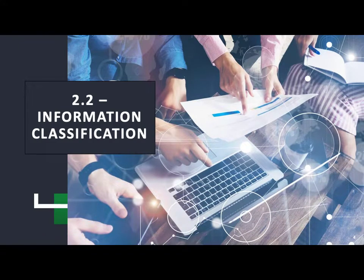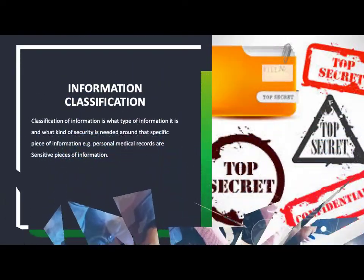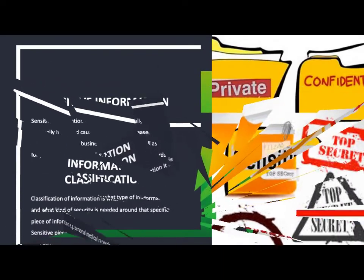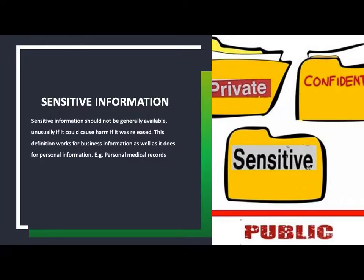Next, 2.2 — that's going to be classification of information. This revolves around how we can secure different pieces of data. For instance, do we need to make sure our medical records are private or out in the open? Obviously we need to make sure they are private and confidential. The first one is sensitive information — this is information that should not be generally available, and if put out in the open it could harm someone. For instance, personal medical records.